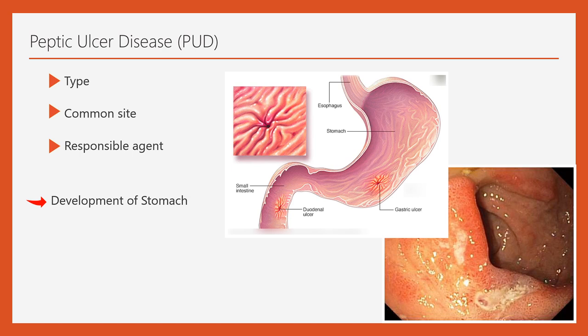The lesser curvature is a common site for gastric carcinoma. The agent responsible for peptic ulcer disease (PUD) is Helicobacter pylori — just remember this important clinical point.